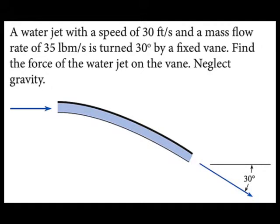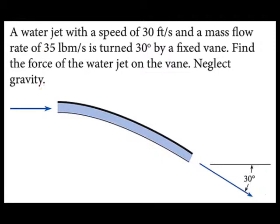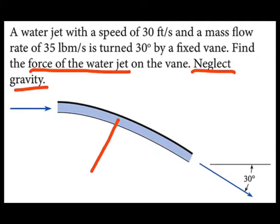Welcome. I'll begin by interpreting the problem statement. This involves a water jet with a speed of 30 feet per second, a mass flow rate of 35 pounds per second, and a turning angle of 30 degrees. We're told to neglect gravity and we're looking for the force of the water jet — the push of the water jet on the vane, which would look just like this.